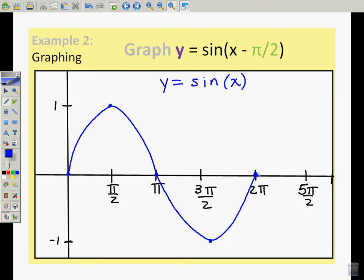When we're talking about phase shift, we remember that phase shift is equal to -c/b, which in this case is -(-π/2)/1. So our phase shift is equal to π/2.